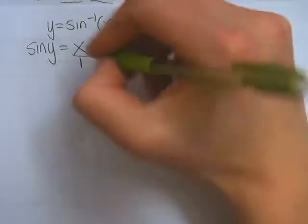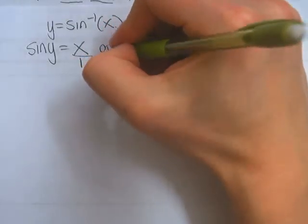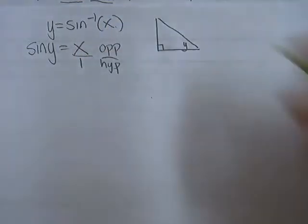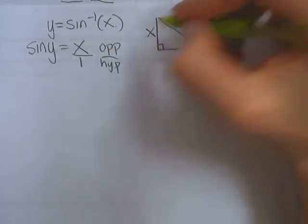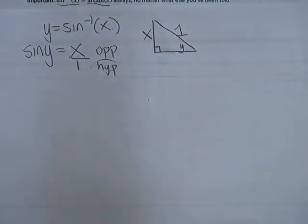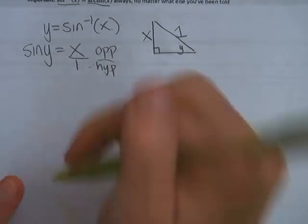Okay, and then ratio of the sides, this is opposite over hypotenuse. So the opposite side is this guy, so that's x, and the hypotenuse is 1.